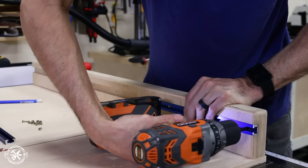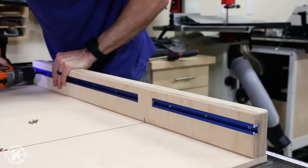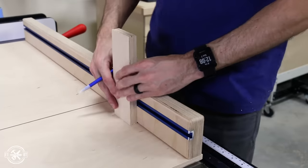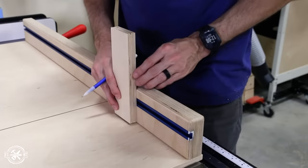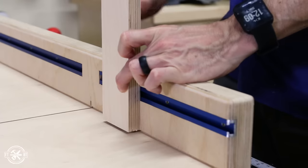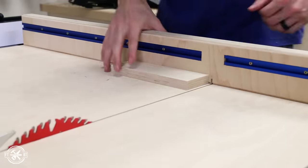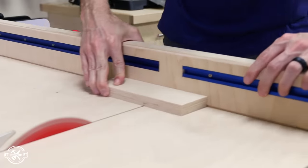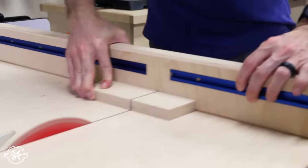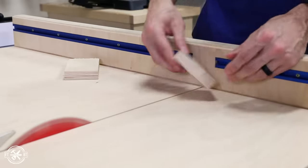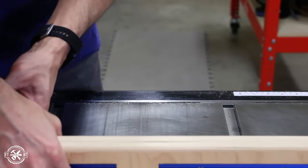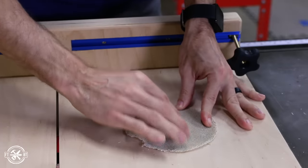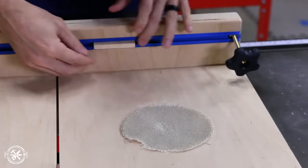Next I grabbed my T-track and I secured it into place and started making the stop block. Now the stop block is just a simple design that I got from Jay Bates. He used this on his miter saw station. It's a small block of wood with a spline on the back. The spline is going to help keep the block from rotating when you're locking it down, and this will help from throwing off the measurement that you just set for it.